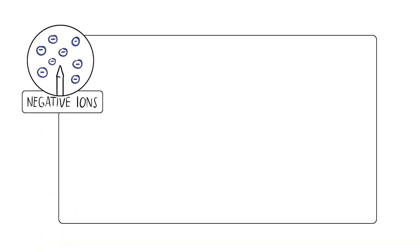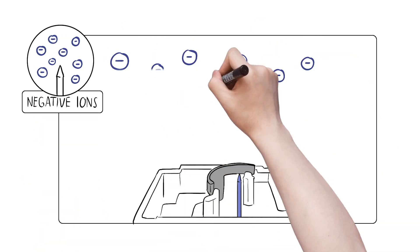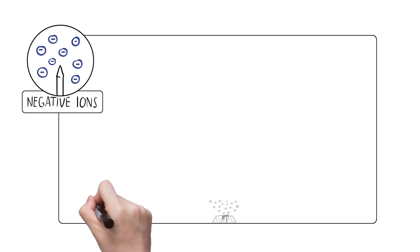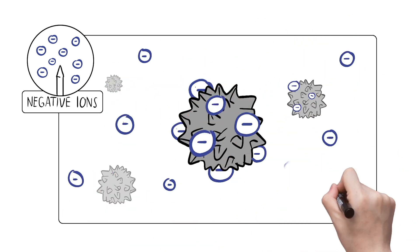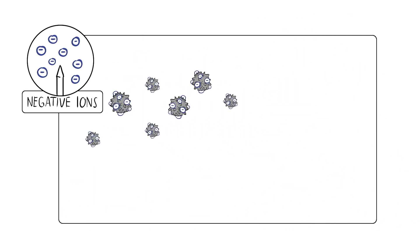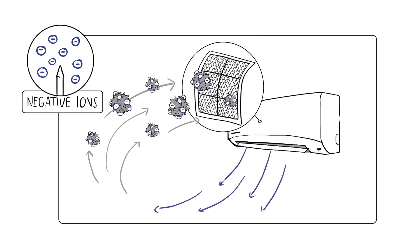2. Negative ions. The ion generator releases negative ions. Negative ions attach to dust particles. These particles are carried back and trapped at the filter, circulating purified air.